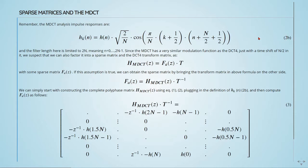The filter length here is limited to 2 times capital N, meaning that small n goes from 0 to 2 times capital N minus 1. Since the MDCT has a very similar modulation function as a DCT4, we just have this time shift of capital N divided by 2.